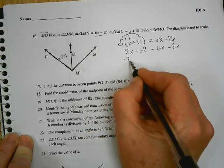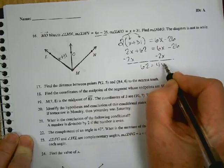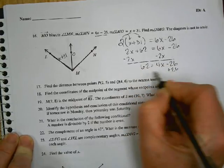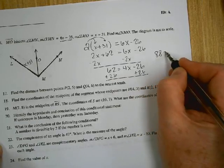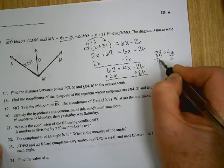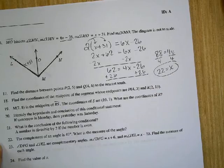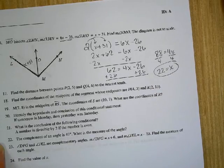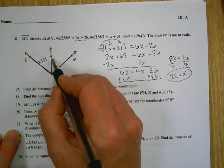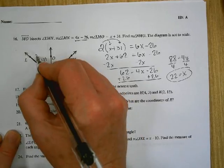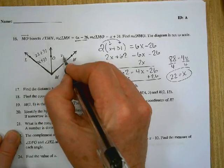Distribute: 2x plus 62 equals 6x minus 26. Subtract 2x: 62 equals 4x minus 26. Add the 26: 88 is equal to 4x. Divide by 4: x is 22. Did they ask me to find x? No. What did they ask me to find? Well, NMO ought to be the same thing as LMO. So 22 plus 31 is 53 degrees.